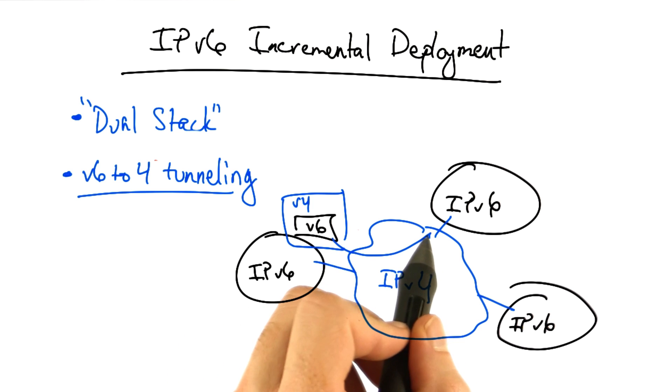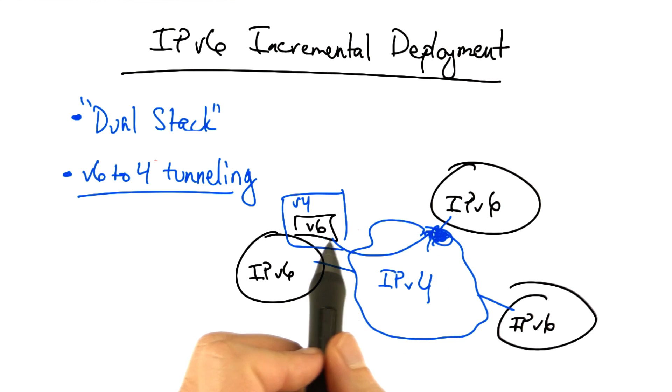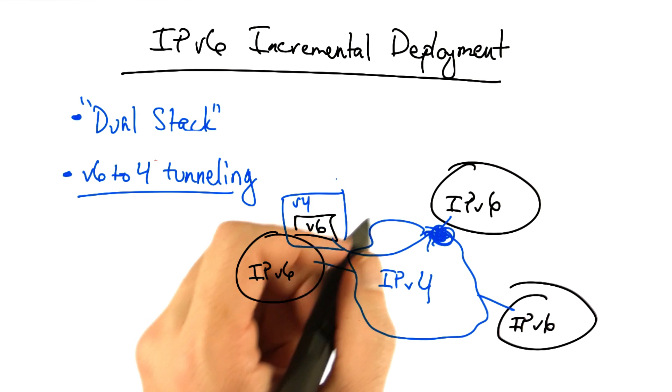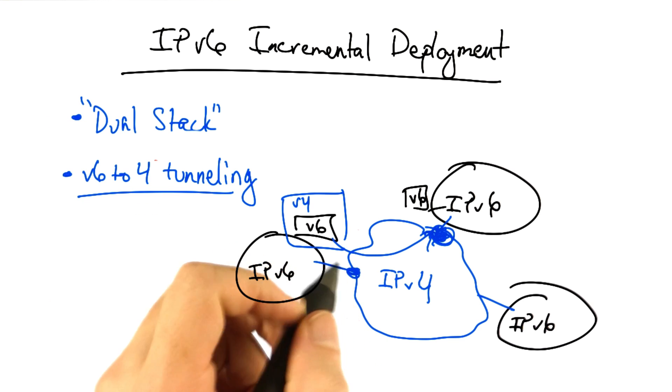Now that v4 packet is routed to a particular v4 to v6 gateway corresponding to the v6 address that lies behind that gateway. And at this point, the outer layer of encapsulation can be stripped and the v6 packet can be sent to its destination.